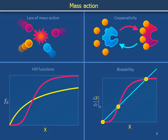In the last module, we investigated the dynamics of protein levels in a system where the average rate of protein translation was independent of protein abundance.